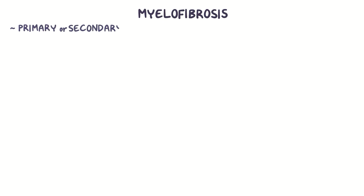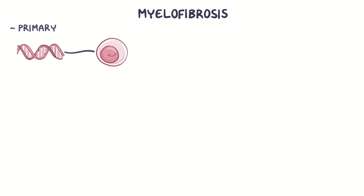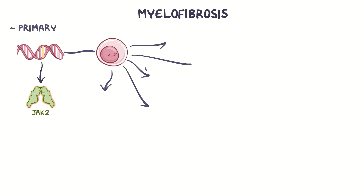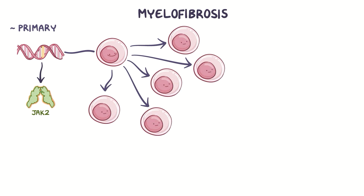Myelofibrosis can be primary or secondary. Primary myelofibrosis is caused by a gene mutation within hematopoietic cells, which activates a signaling pathway called the JAK-STAT pathway. The mutation in the gene encoding the enzyme JAK2 activates the JAK-STAT pathway to go into overdrive so that the cells begin to mature and divide rapidly, quickly filling up the bone marrow.